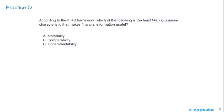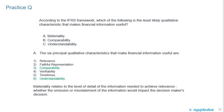Another practice question: According to the IFRS framework, which of the following is the least likely qualitative characteristic that makes financial information useful? A. Materiality, B. Comparability, or C. Understandability. The correct answer is A. The six principal qualitative characteristics are: relevance, faithful representation, comparability, verifiability, timeliness, and understandability. Comparability and understandability are both qualitative characteristics, making materiality the least likely. Materiality relates to the level of detail needed to achieve relevance — whether the omission or misstatement of information would impact the decision maker's decision.